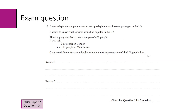Let's take a look at an exam question. A new telephone company wants to set up a telephone and internet package in the UK. It wants to know what services would be popular, and the company decides to take a sample of 400 people — asking 300 from London and 100 from Manchester.